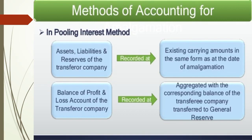In the pooling of interests method, the assets, liabilities, and reserves of the transferor company are recorded at the existing carrying amount in the same form as at the date of amalgamation — that is, at the book value. The balance of the profit and loss account of the transferor company is aggregated with the corresponding balance of the transferee company and transferred to general reserve.